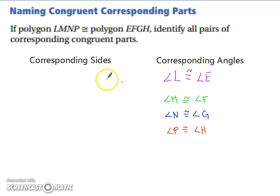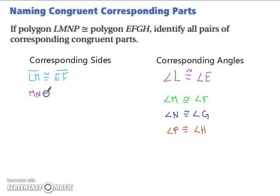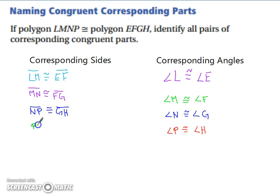Let's look at corresponding sides. Your first two letters go together, so LM is going to be congruent to EF. MN is going to be congruent to FG. NP is going to be congruent to GH. And our fourth side: PL is going to be congruent to HE. When you're doing this, you want to make sure your letters line up. For example, if I wrote PL, I needed to write HE — I couldn't write EH because E corresponds with L, not P.